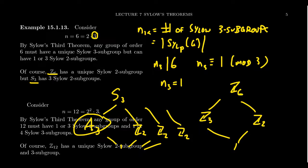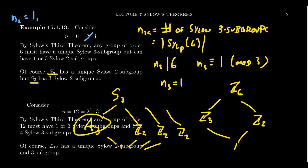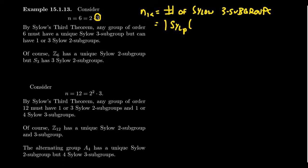What about Sylow 2-subgroups of groups of order 6? By Sylow's third theorem, N2 must divide 6 and be 1 mod 2, which means N2 must divide 3 and be odd, giving possibilities 1 and 3. Both are realized: Z6 has a unique subgroup of order 2, while S3 has three subgroups of order 2. So both possibilities allowed by the theorem actually occur.